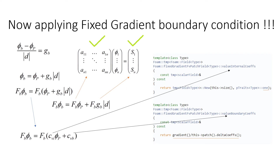Once you understand one boundary condition, all other boundary conditions can be easily understood by looking at the code — but first we should understand the basics. Let's apply the fixed gradient boundary condition. We have this gradient equal to gb, so: (phi_b minus phi_P) divided by magnitude of distance d equals gb. Rearranging, magnitude d goes over, so phi_b equals phi_P plus gb times magnitude of distance d, where phi_b is at the boundary and phi_P is the neighboring cell center.